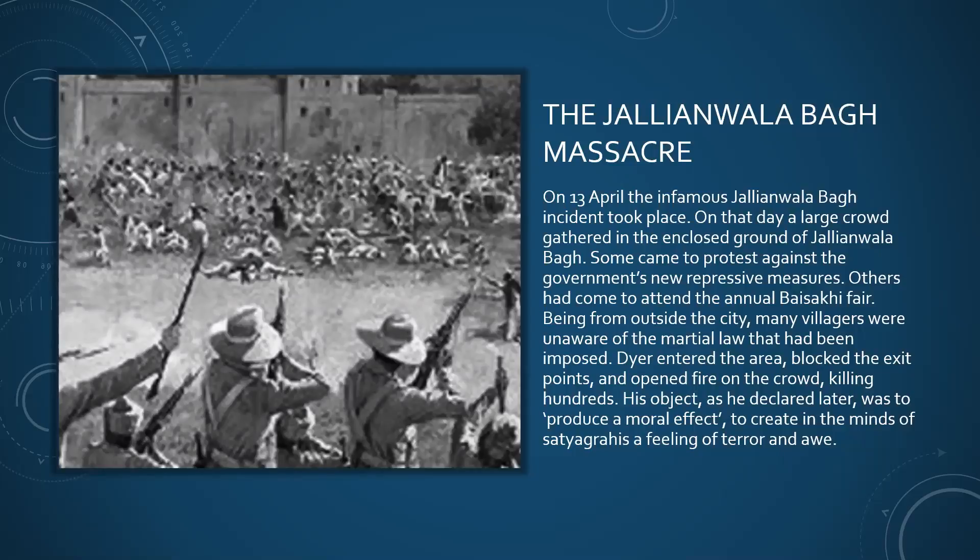General Dyer entered the enclosed area, blocked the exit points, and opened fire on the crowd, killing hundreds. As he declared later, his main objective was to produce a moral effect in the minds of the satyagrahis — to create a feeling of terror so that they would never again come together in protest against the laws passed by the British government.